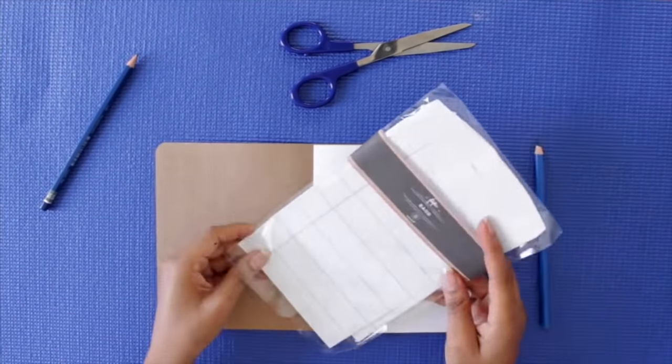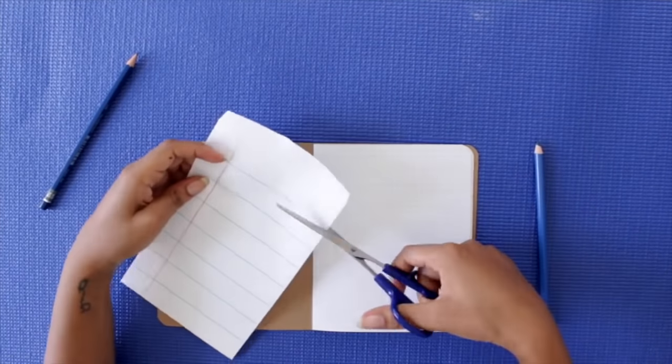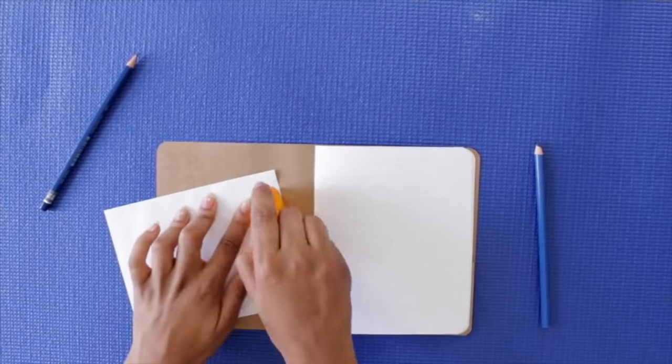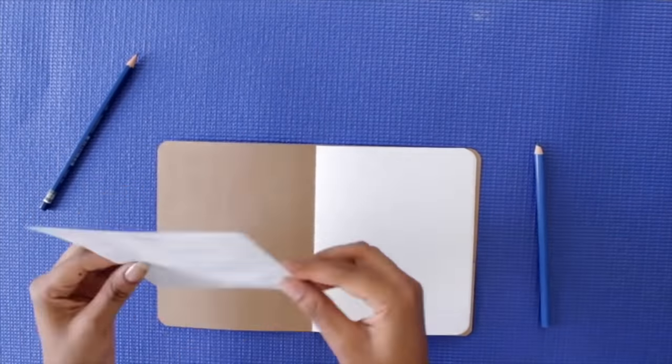Now if your paper wasn't large enough to add pockets then don't worry you can just add them later. One of my favorite ways to do that is to use glassine or paper bags. You can just glue them into the cover and they're great for keeping receipts.